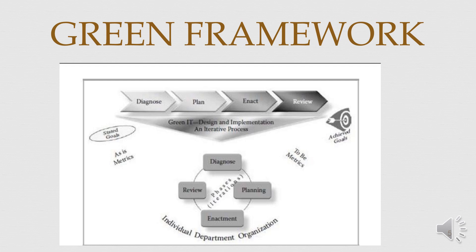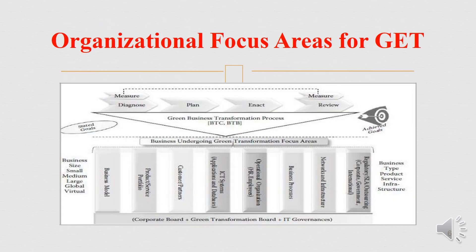Green Framework — how it works. Green IT Design and Implementation is an iterative process. It has four phases: Diagnose, Plan, Enact, and Review. Stated goals are assets and metrics. You will be having individual, department, and organization levels, and you can have your own metrics. You have to check whether the achieved goals are there or not.